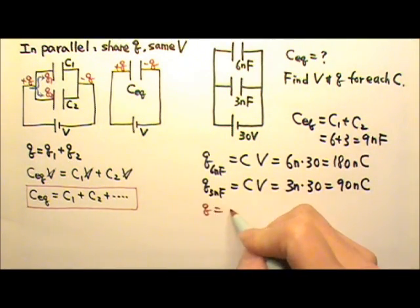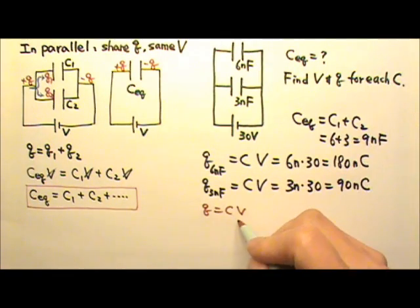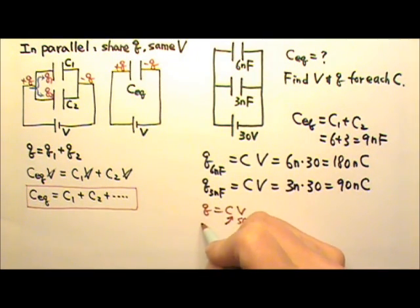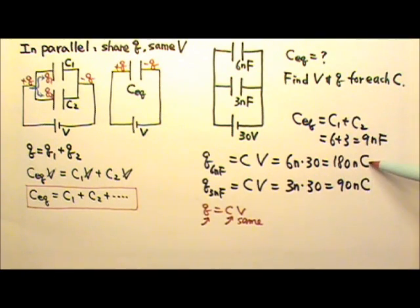Because Q equals CV, when capacitors are connected in parallel, they get the same voltage. That means the one with larger capacitance would carry more charge. And they are directly proportional to each other. So the one with twice the capacitance carries twice the charge.